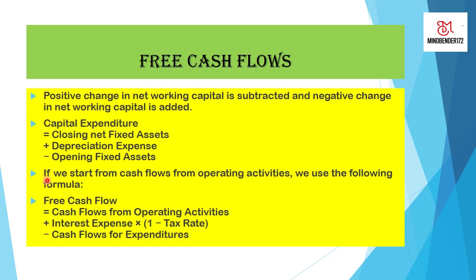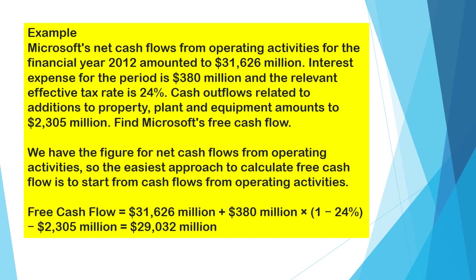The second method is free cash flows from operating activities. Free cash flows equal cash flows from operating activities, plus interest adjusted for tax, minus cash flows from capital expenditures. A worked example on cash flows is shown for a company — you can go through it and see how the free cash flows are obtained.